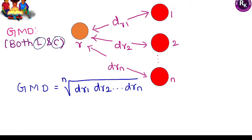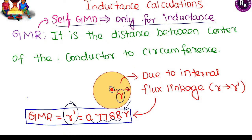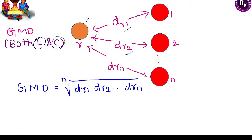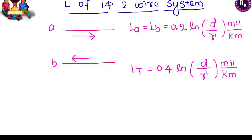GMD (Geometric Mean Distance) is used for both inductance and capacitance calculations. It refers to the actual distance between conductors in a bundle. Self-GMD refers to mutual distance within conductors of the same phase, whereas mutual GMD is the distance between conductors of different phases. The formula for GMD is the n-th root of the product of all inter-conductor distances — for three conductors, it is the cube root of the product of three distances.